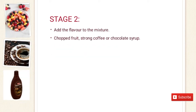In the second step, the flavor is added to the mixture. Mr. Anwar told them: We can use a mixture of any flavor. Either chopped fruit is added, or a strong coffee or chocolate syrup. A syrup is a mixture of sugar and water.